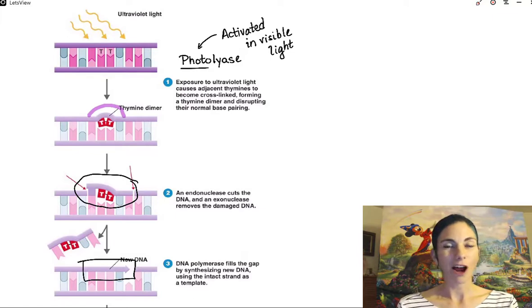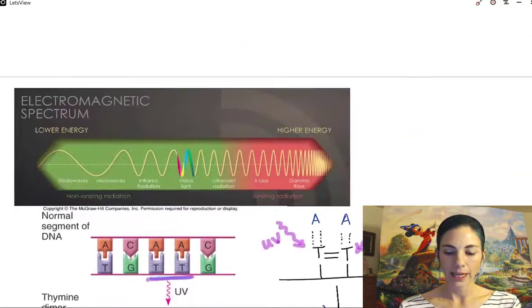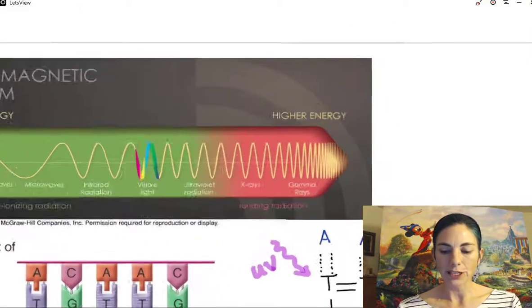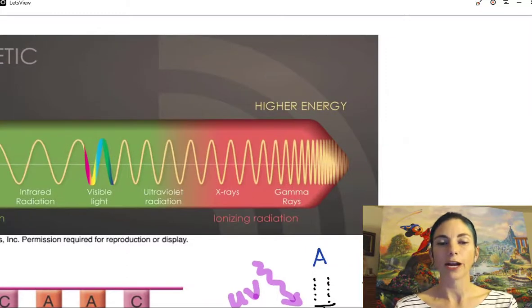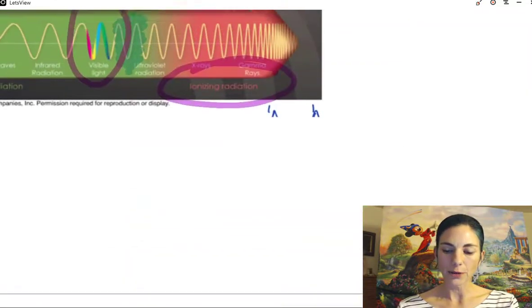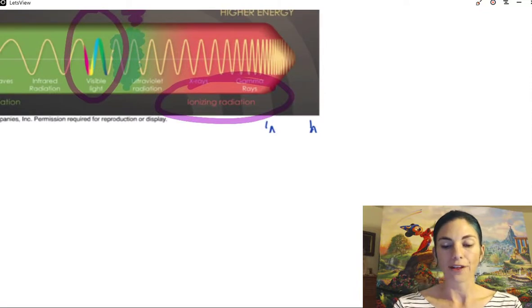So that ends our discussion on UV irradiation. Let's take a quick look at ionizing radiation. So ionizing radiation is going to be the higher energy x-rays and gamma rays. And so what we're going to do is briefly talk about how this works.